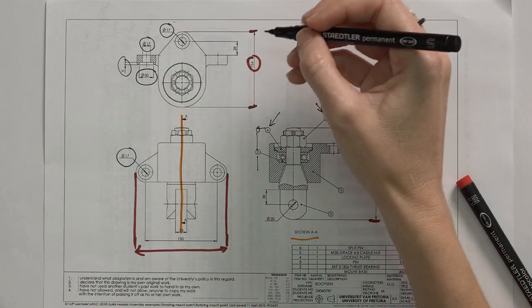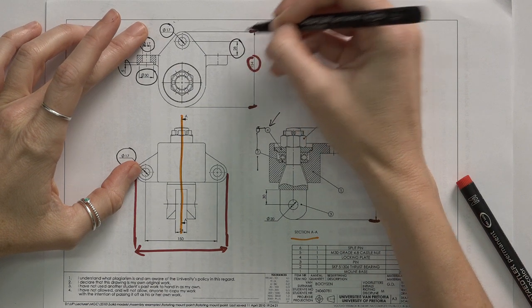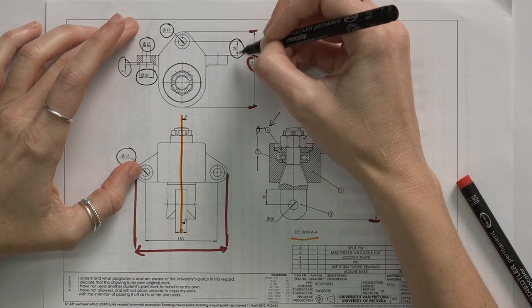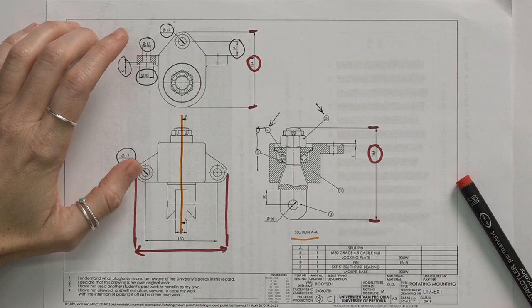So all of these will be seen as mounting dimensions, as well as this one, because that gives us an indication of how high off this part the part will actually be mounted.